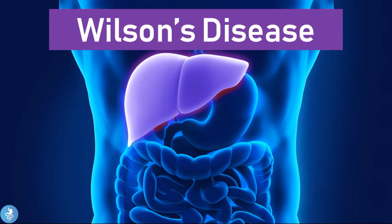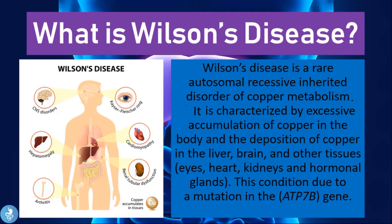Welcome to How to Gastro. In today's video we'll be talking about Wilson's disease. Wilson's disease is a rare autosomal recessive inherited disorder of copper metabolism, characterized by the excessive accumulation of copper in the body and the deposition of copper in various organs, including the liver, brain, eyes, heart, kidneys, and hormonal glands. This condition is due to a mutation in the ATP7B gene.